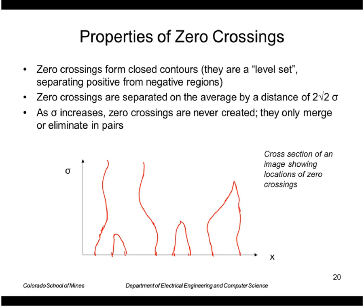We can estimate the average separation of zero crossings. If we convolve the Gaussian of sigma with the image, we would expect those zero crossings to occur on the average about every two times square root of two sigma. And also as sigma increases, zero crossings are never created, they only merge or eliminate in pairs.